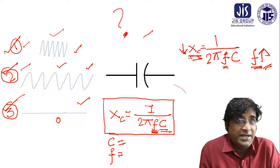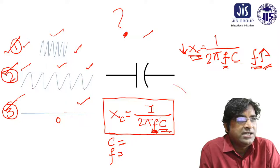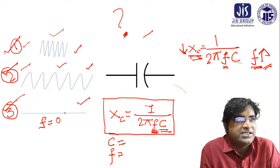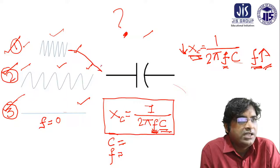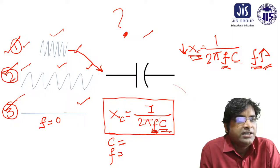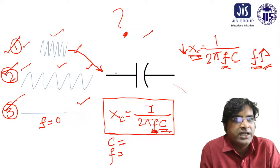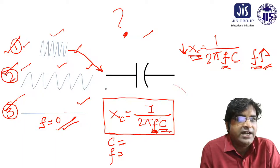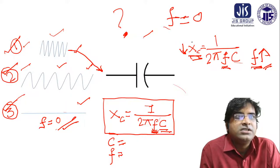That means, in the case of these three signals: for the DC signal, f equals zero; for the middle signal, there is some frequency; and for the high-frequency signal, f is maximum. So the probability of passing the high-frequency signal is much higher because f is very high and therefore XC is low. The middle signal has moderate passing capability because f is less than the high-frequency signal.